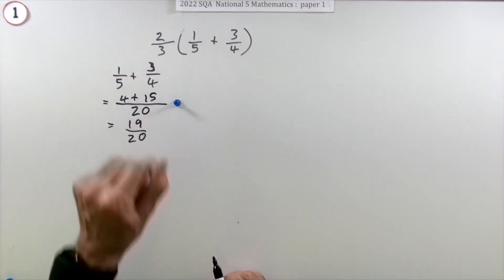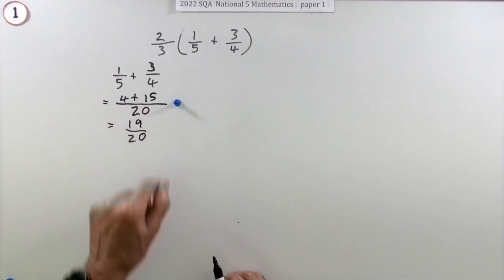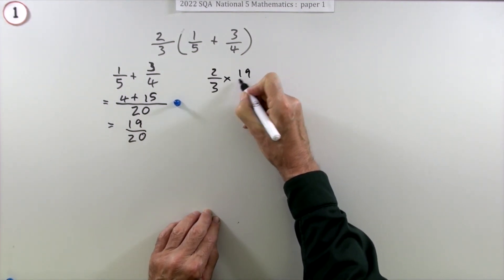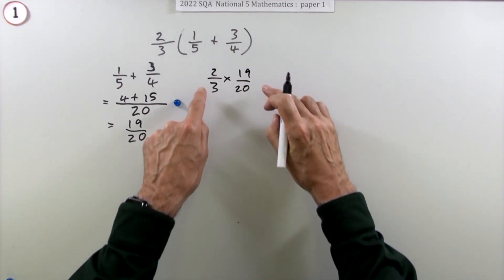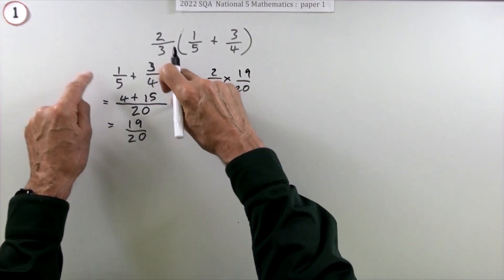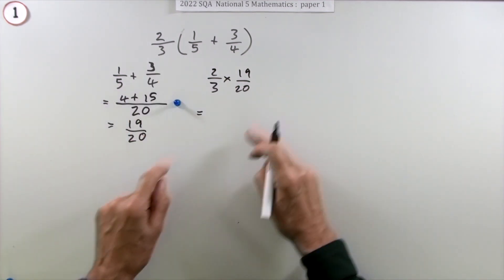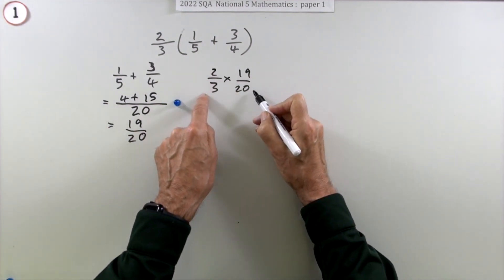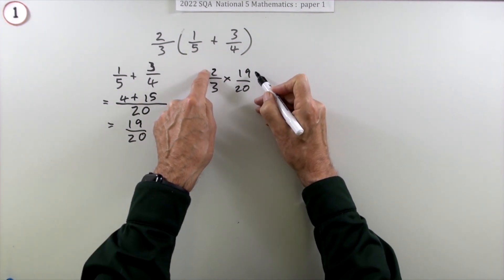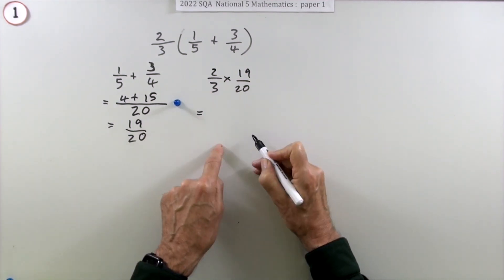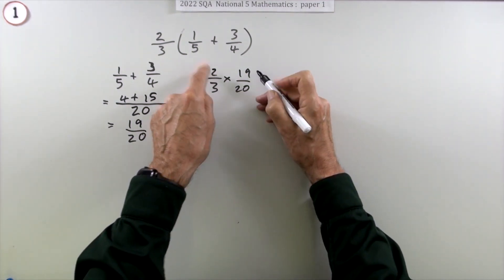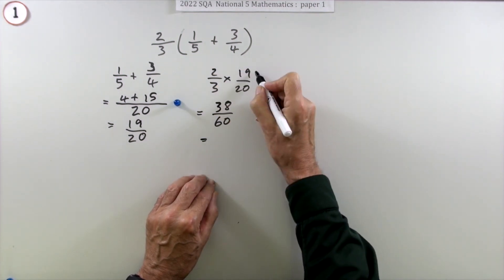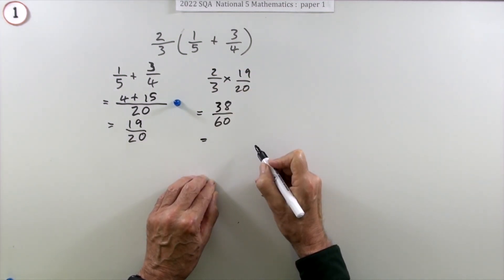So that part comes to 19 twentieths. Now just changing them both into fractions out of 20 gets the first mark. Now you have to do the second part, which is what's two-thirds of 19 twentieths. Well, multiplying fractions is easy. You can multiply whatever you like together. You can only add things together if they're of the same thing, but you can multiply anything. So the multiplication is easy, just multiply. You could do 38 over 60 and then simplify.